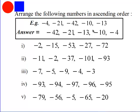Since we can compare numbers using greater than and less than, then we should be able to arrange them in ascending order. The example we have here: minus 4, minus 21, minus 42, minus 10, and negative 13.